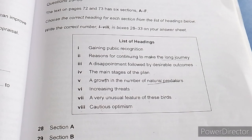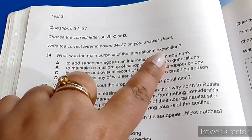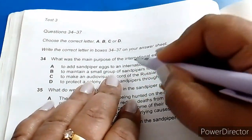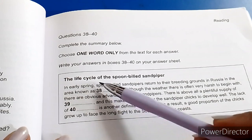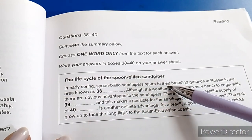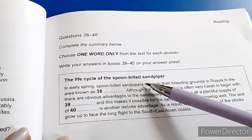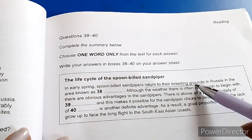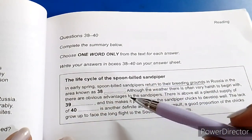Now we have read all the headings. Then we read the first MCQ question: what was the main purpose of the international expedition? Our keyword here is 'international expedition.' We will also look for 'breeding grounds' as another keyword — they are in Russia, in an area whose name we will find out.